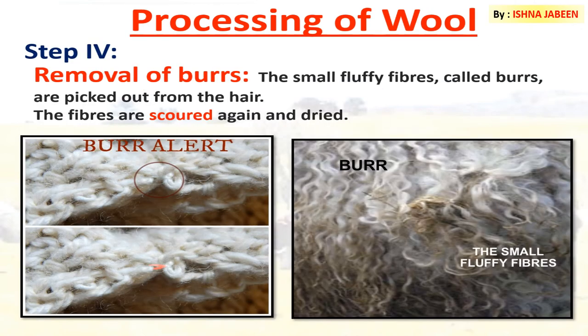The fourth step in processing of wool is removal of burrs. The small fluffy fibers are called burrs — they are picked out from the hair, as you can see in the picture. These are the same burrs which sometimes appear on your sweaters. The fibers are then scoured again and dried, leaving wool ready to be drawn into fibers.